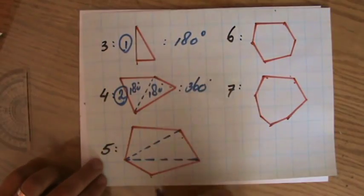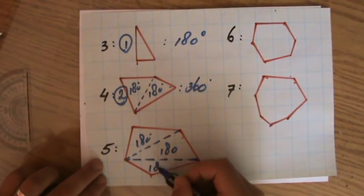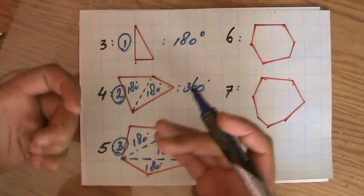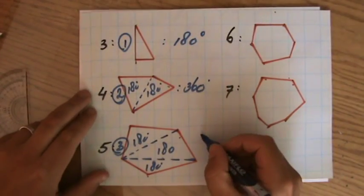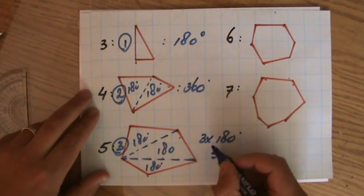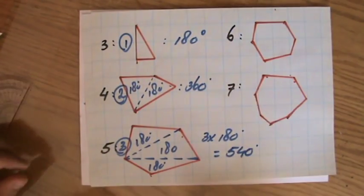Two triangles, and here, for the pentagon, we have three triangles, okay? So, the pentagon, the sum of the interior angles, adds up to three times 180 degrees, which is 540 degrees.